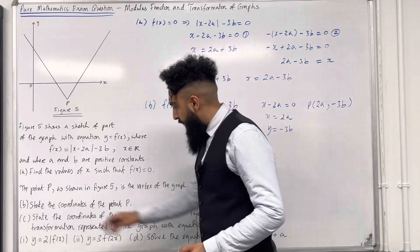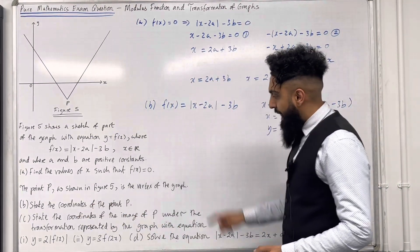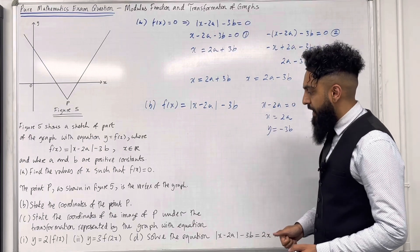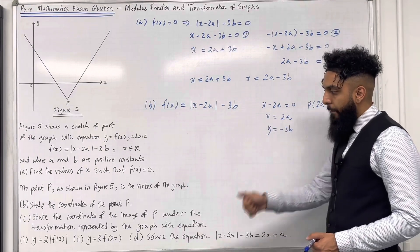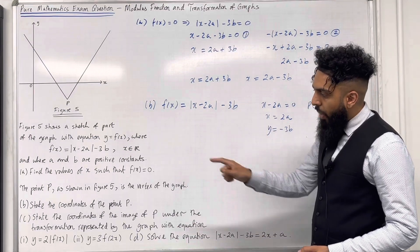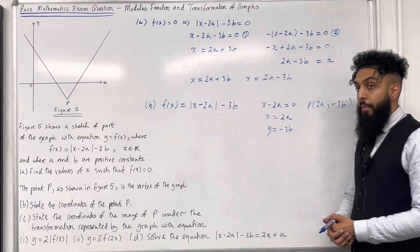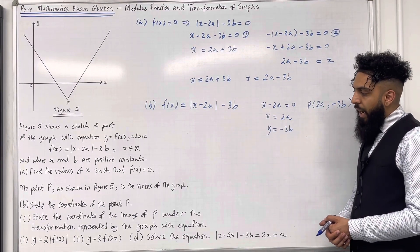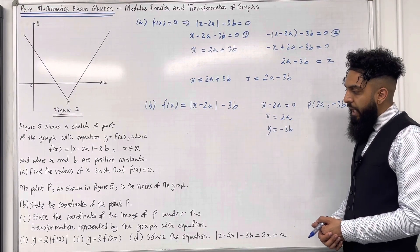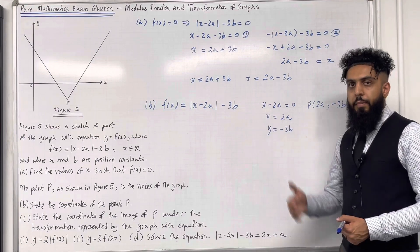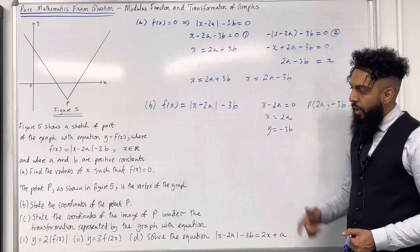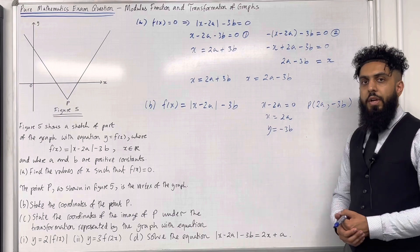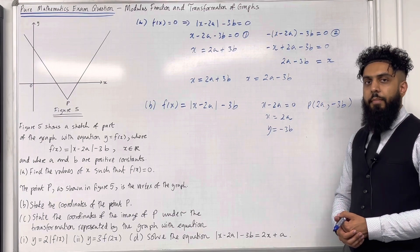Part C: state the coordinates of the image of P under the transformation represented by: part 1, y = 2|f(x)|; part 2, y = 3f(2x). Please pause the video, have a go at part C parts 1 and 2; once you've got your complete solution, then play the video.